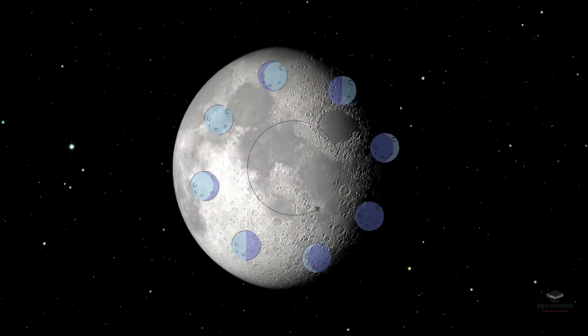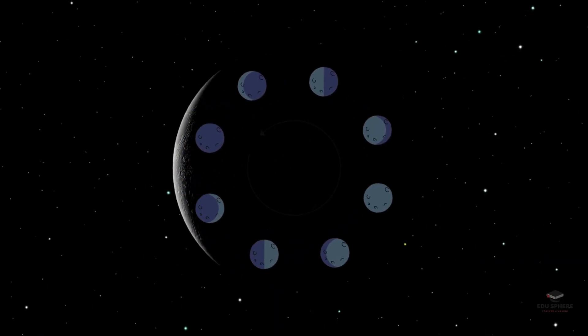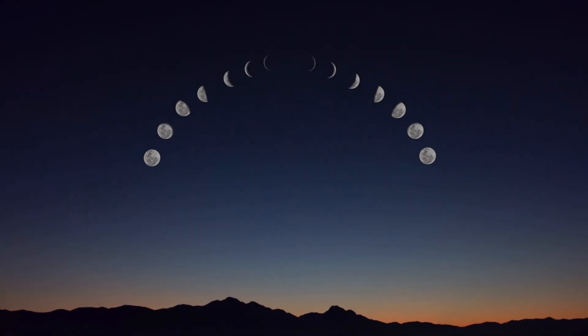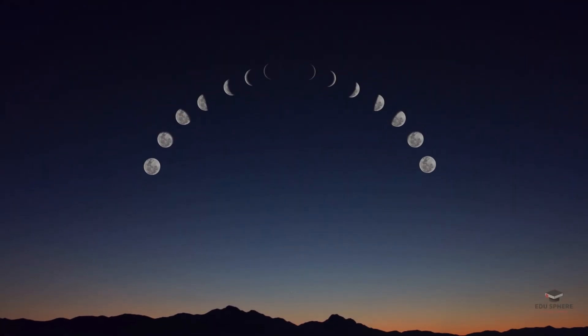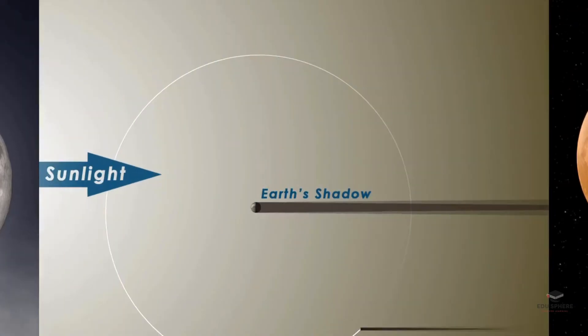Sometimes, you might see the moon glowing red. Other times, the moon may appear larger than usual. But here's the thing, the moon itself isn't changing colors or sizes.